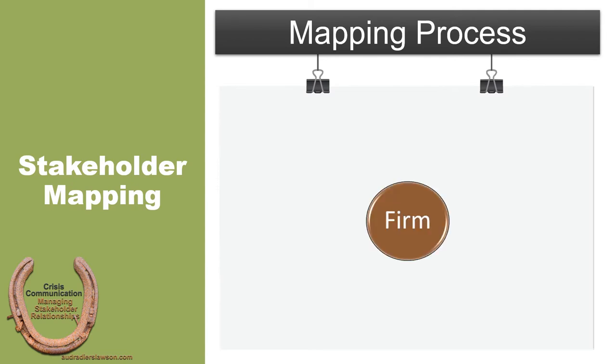We have to begin somewhere, so let's begin with the organization. An organization should begin by listing all the stakeholders it knows about — this means due diligence in trying to identify as many stakeholders as possible, both those the organization regularly deals with and those it does not. An effective issues management process will help to generate a good list of stakeholders and provide insights into the relationship with the organization, which is essential for creating an effective map and identifying relationships amongst those stakeholders.